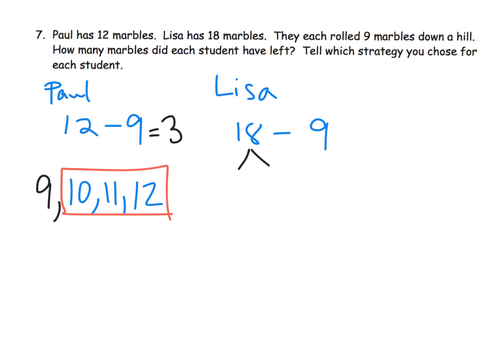For Lisa, let's say I'm going to do the take from 10 strategy. So I'm going to take that 18 and change it to 8 and 10. I could see that 10 minus 9 is 1, and then adding in the original 8 gives us 9, so 18 minus 9 is 9.